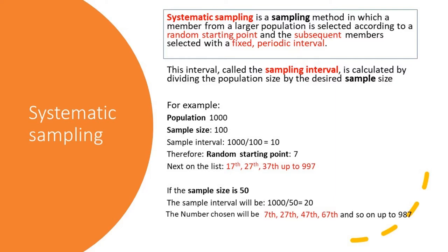Then we go on to the 17th, 27th, 37th, up to 997. By the time we reach 997, we will have obtained our sample size of 100. We may take another example. Suppose the sample size should be 50. Therefore the sampling interval will be 1000 divided by 50, that is 20. So the numbers chosen will be 7, followed by 27th, 47th, 57th, up to 987. By that time we will obtain our sample of 50.